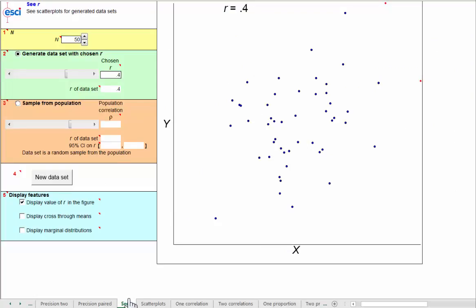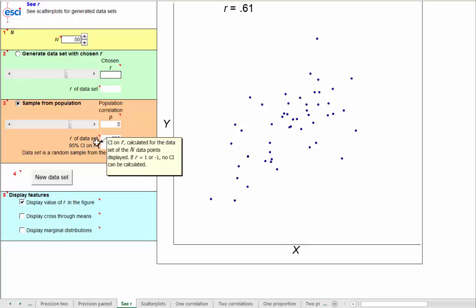Back at the CR page, we generated data sets with a chosen value of r. If I click down here at red 3 rather than red 2, now I can sample from an underlying bivariate normal population that has a correlation between y and x of rho equals some value that I set with this slider. Here I've set 0.5, and this first sample has an r value of 0.36. If I click again, 0.4, click again, 0.45, 0.55, 0.49, all with sample size n equals 50.